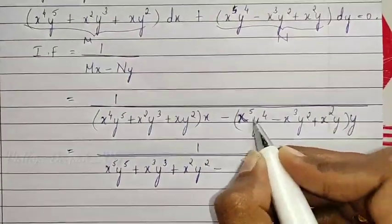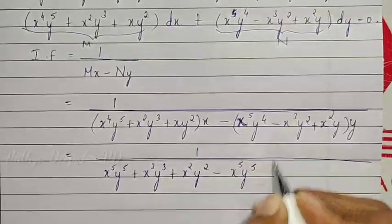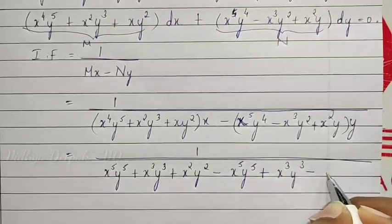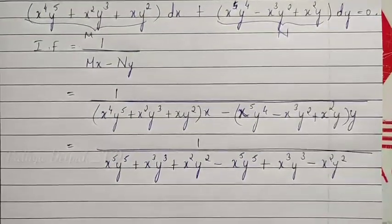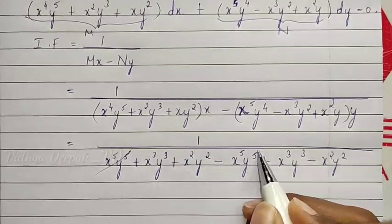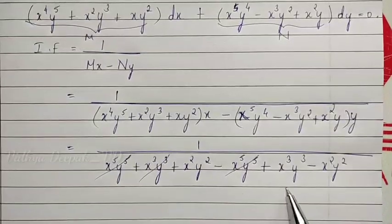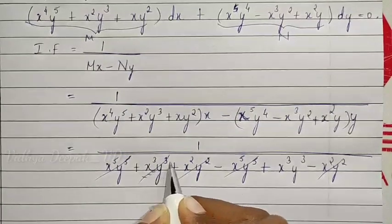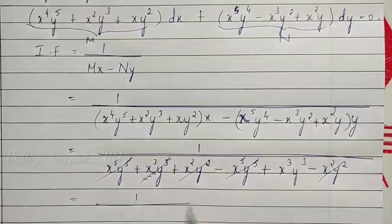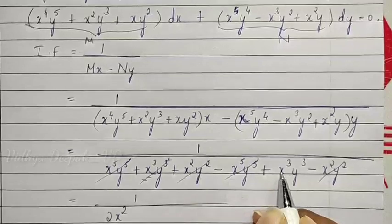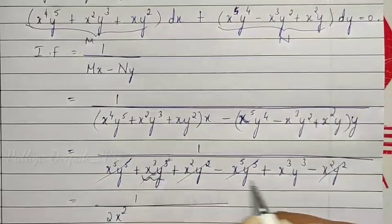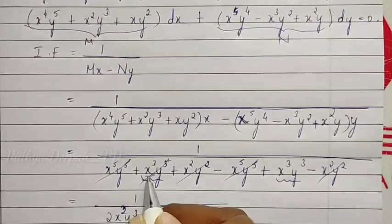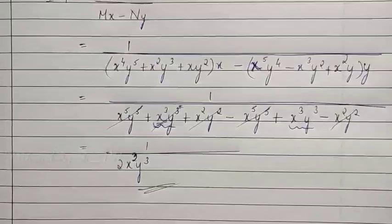Minus into plus is minus. Taking y inside: x⁵y⁵ − (−x³y³) = +x³y³, and +(−x²y²) = −x²y². Now, x⁵y⁵ cancels with −x⁵y⁵. The x²y² terms add up (plus and minus cannot cancel, they get added). The x³y³ terms both add. So we get 1 by 2x³y³. We have found our integrating factor: 1 by 2x³y³.